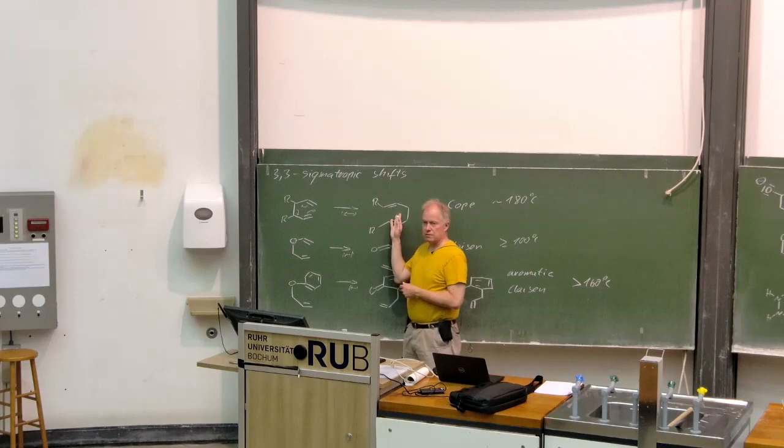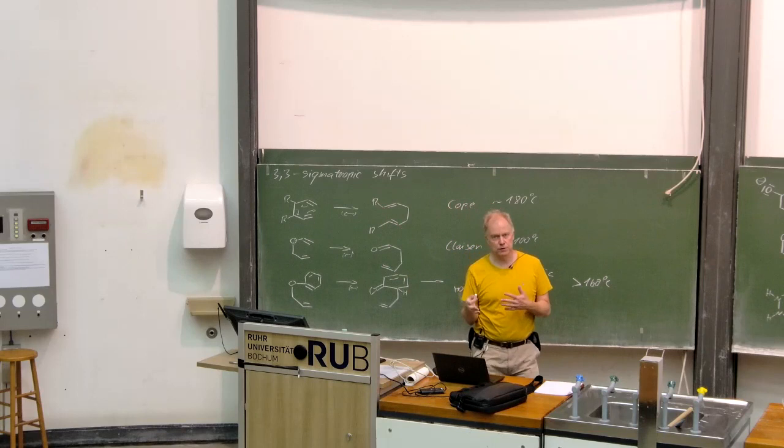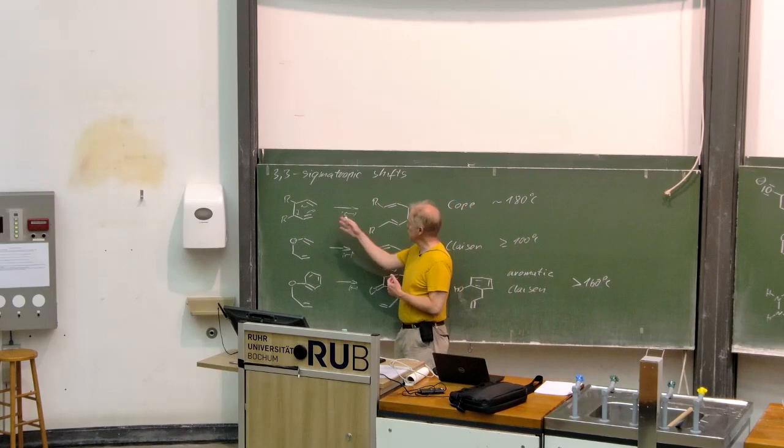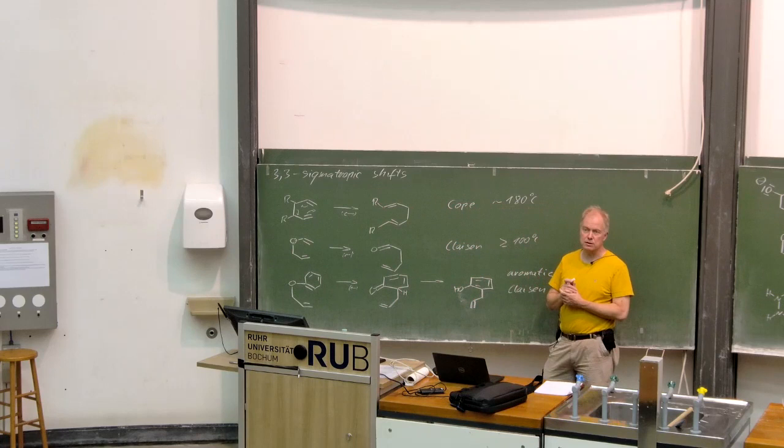Again a hexadiene system but now with more substituents at the olefins, more substituents that the olefins means more stability, so the equilibrium will be on this side of the reaction. The COPE rearrangement typically takes place at 180 degrees.